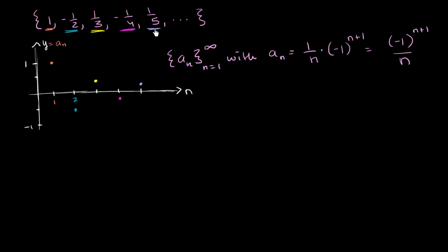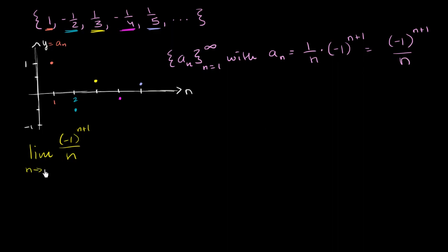I made a claim in a previous video that for this sequence, which can be defined explicitly as negative 1 to the n plus 1 over n, the limit as n approaches infinity is equal to 0. As n gets larger and larger, even though the numerator oscillates between negative 1 and 1, it seems like it will get smaller and smaller. But I didn't prove it, and that's what I want to do in this video.